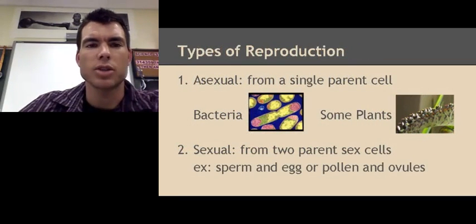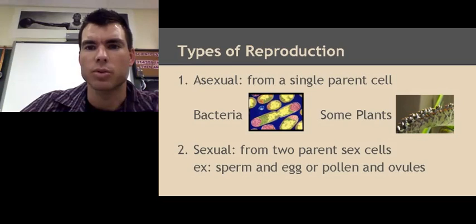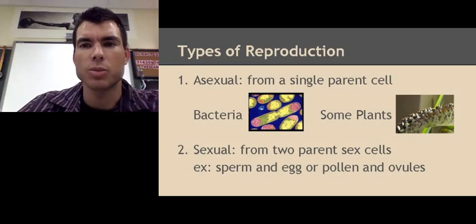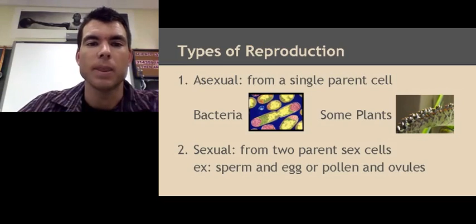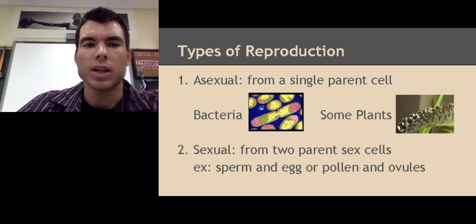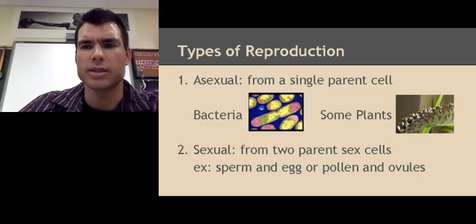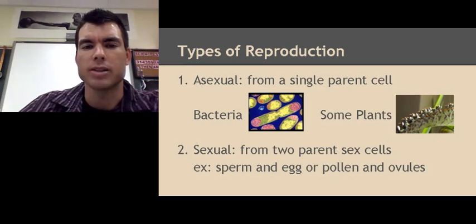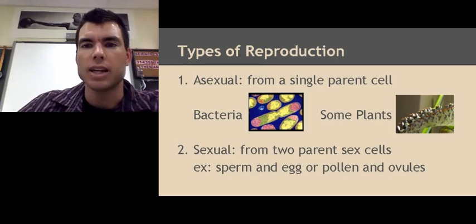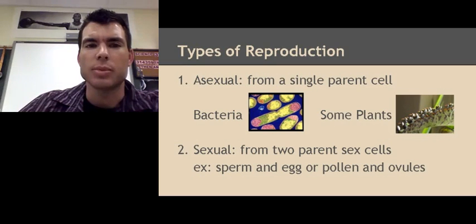When we talk about reproduction, there are two types. Asexual reproduction means it comes from a single parent cell — things like bacteria, which will split from one cell into two and two into four, with each bacterium identical to the previous parent cell. Some plants can also go through asexual reproduction. The other type is sexual reproduction, where you have two parent sex cells — in animals, sperm and egg; in plants, pollen and ovules. Those are our two types of reproduction.